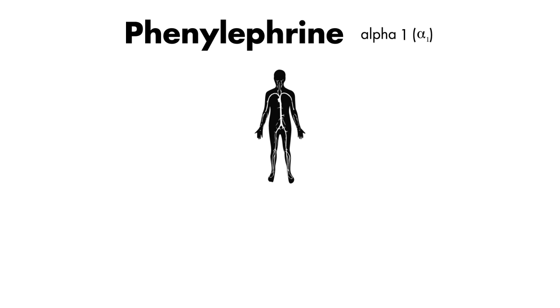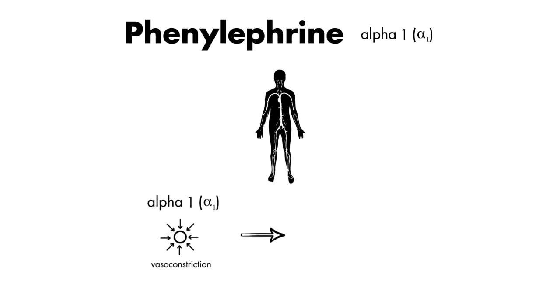So in summary, phenylephrine's main effect is to cause vasoconstriction, which leads to increases in vascular resistance, and as a result raises systemic blood pressure.